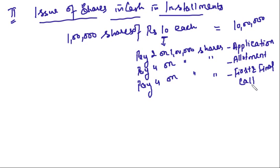At the time of application, they say: if you want to subscribe to 1 lakh shares, bring the application for 1 lakh shares and pay rupees 2 on 1 lakh shares — do not pay rupees 10, pay rupees 2 only. Because we might reject your application, we will refund you rupees 2. It is a sort of token money, like when you go to purchase a postpaid SIM card — they ask for your signed application and a deposit of rupees 250 which will be adjusted against your bill or refunded.